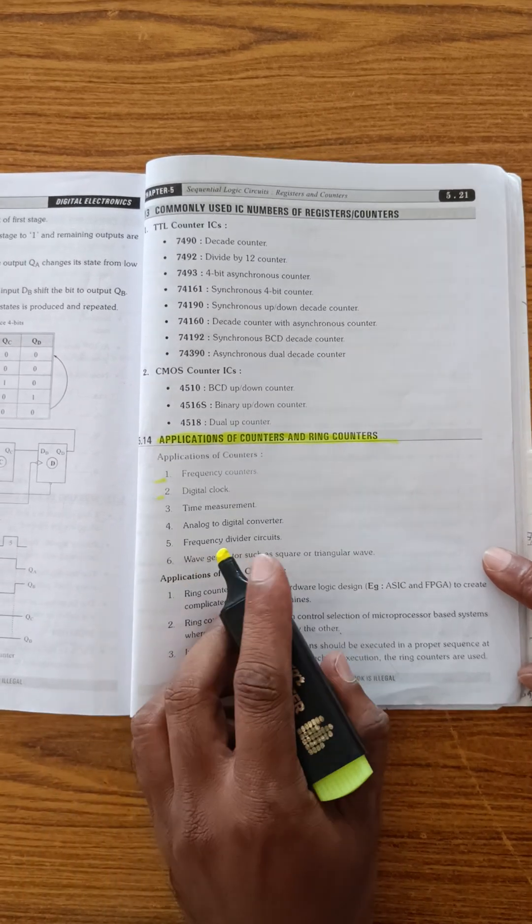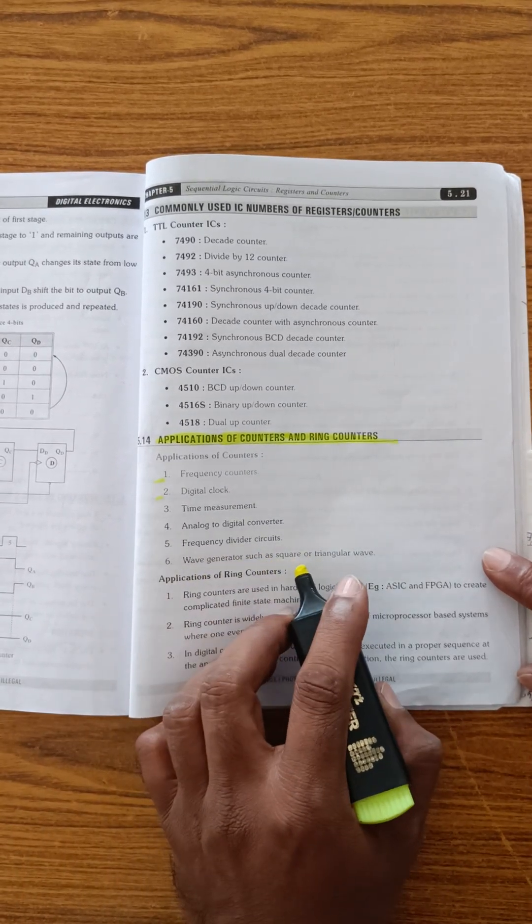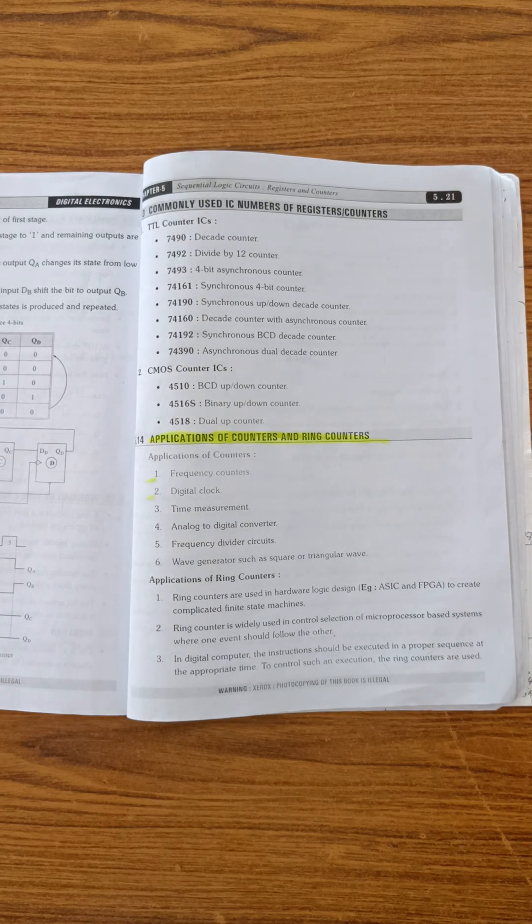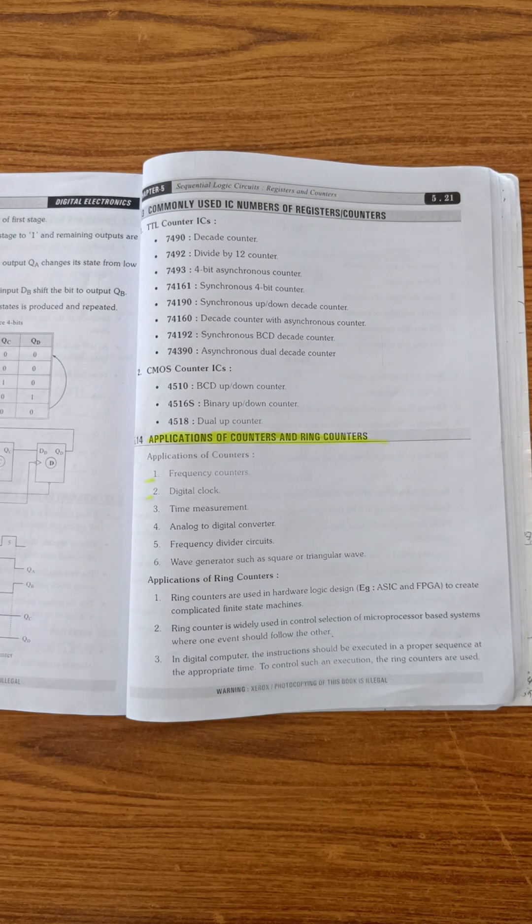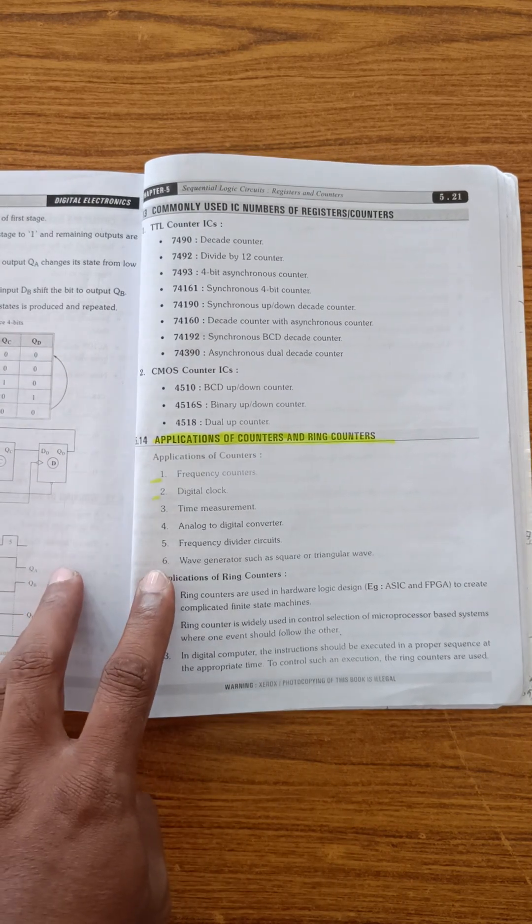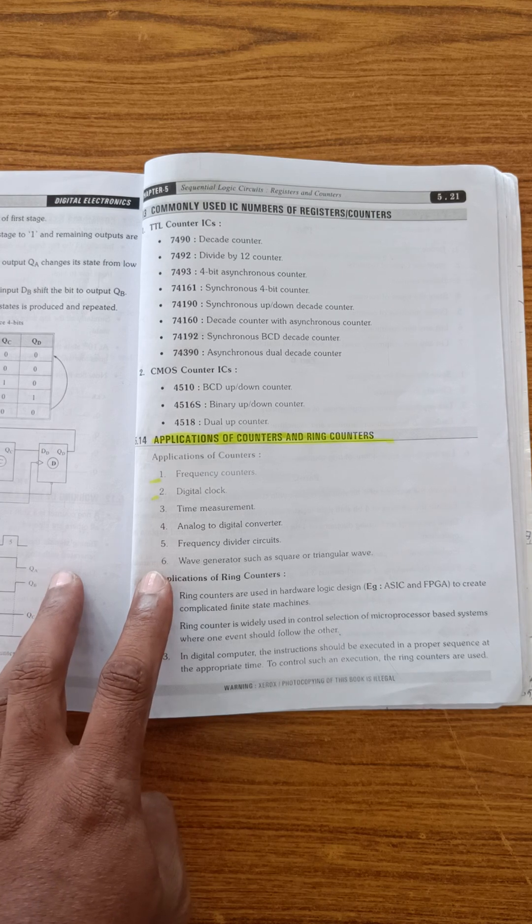Frequency dividers circuits and wave generators such as square and triangular different waves in general. These are the applications, okay. Now coming to the ring counter applications.